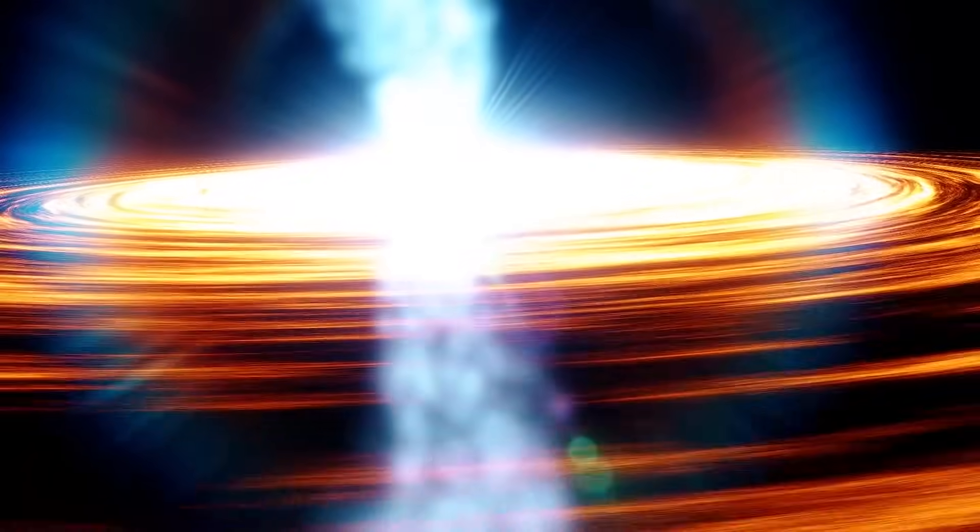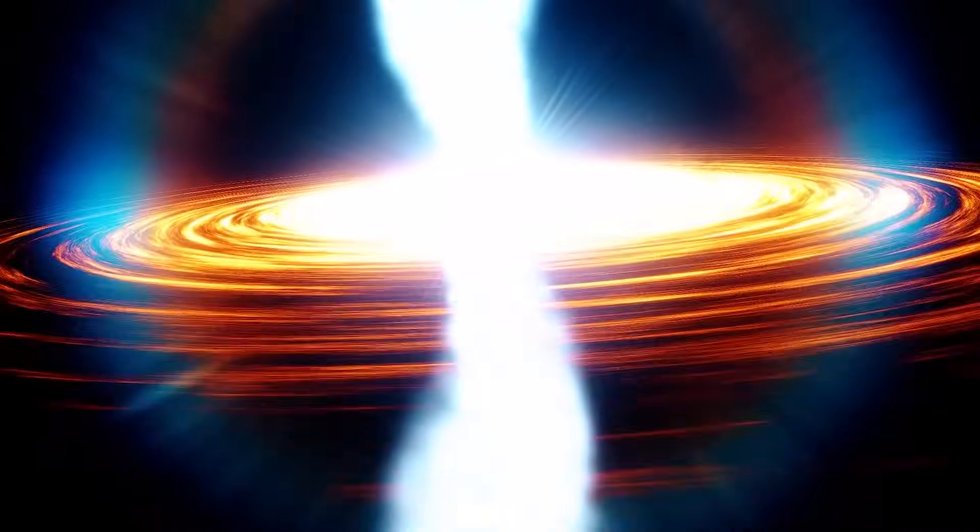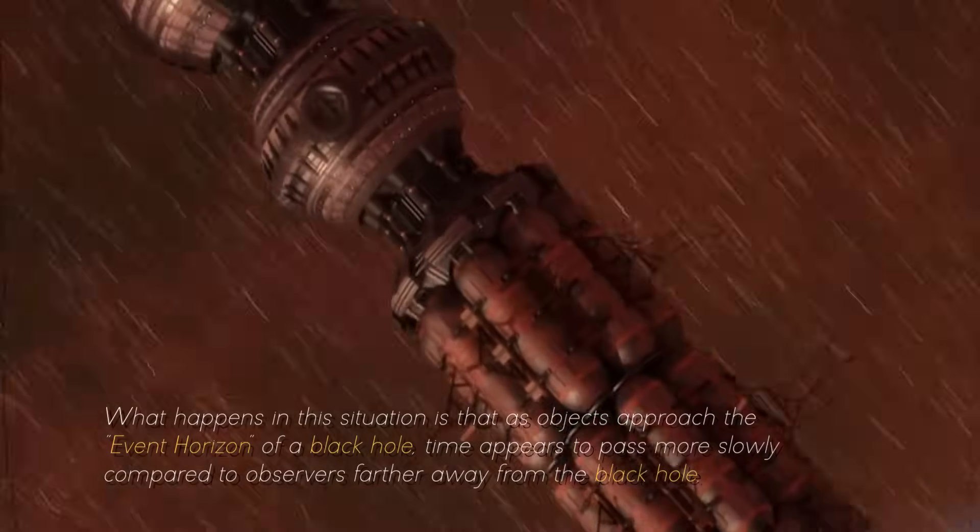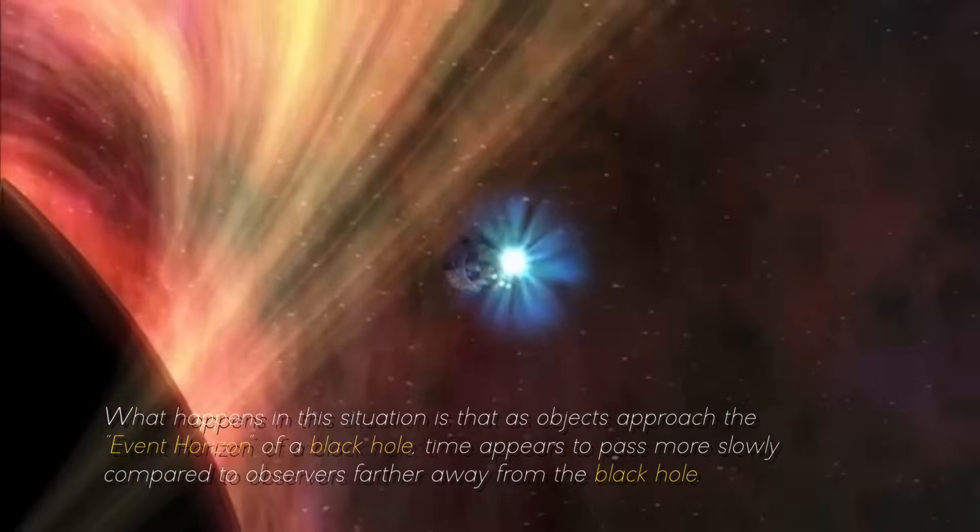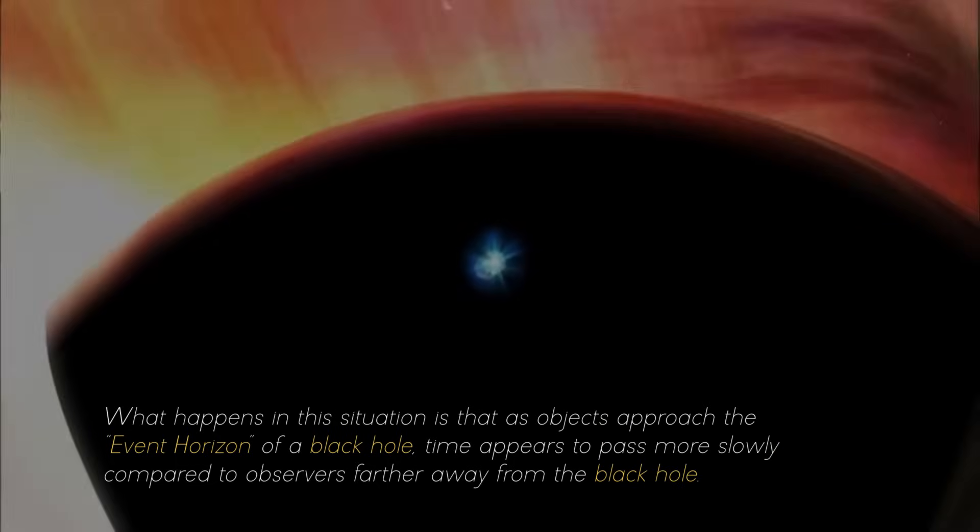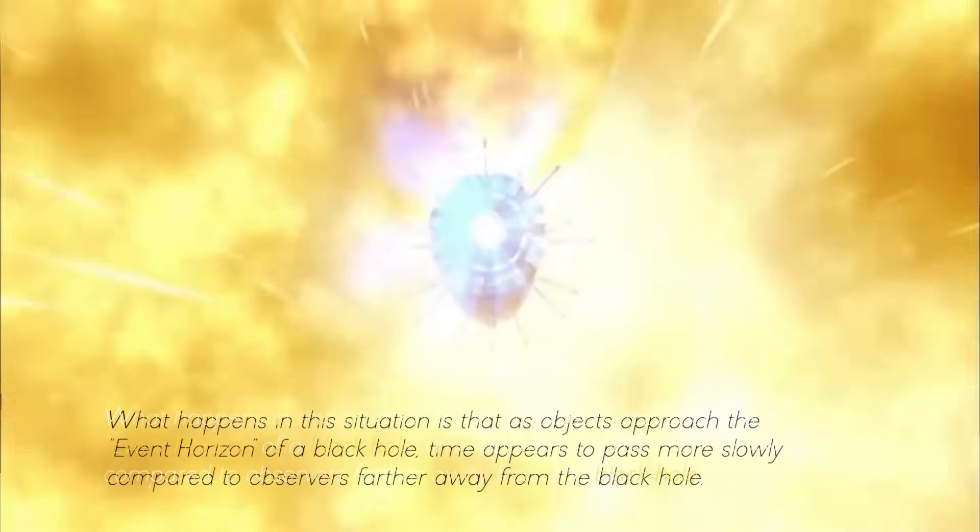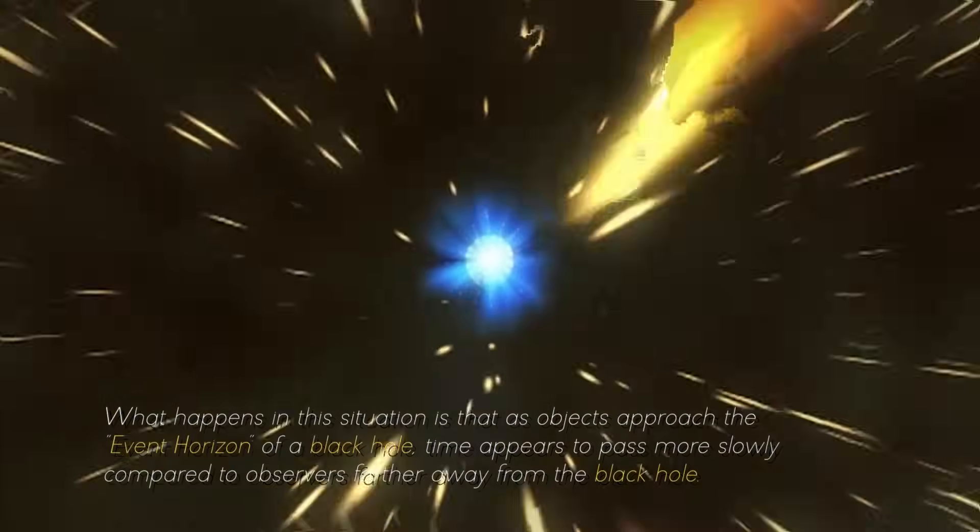But most surprising of all, the extreme gravitational attraction near a black hole gives rise to a phenomenon known as time dilation. What happens in this situation is that, as objects approach the event horizon of a black hole, time appears to pass more slowly, compared to observers farther away from the black hole.